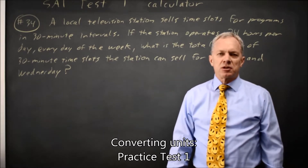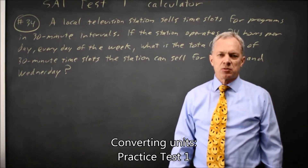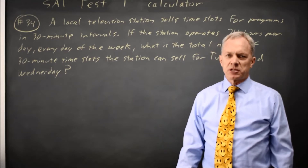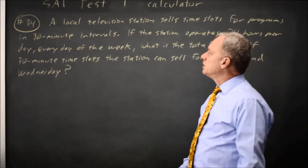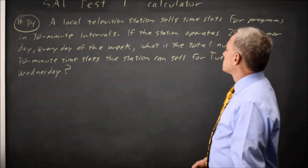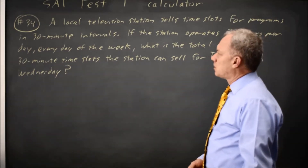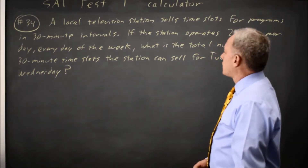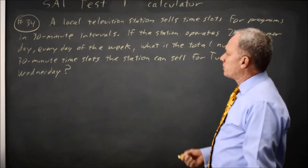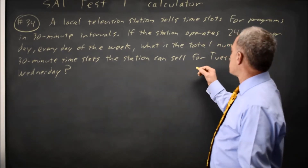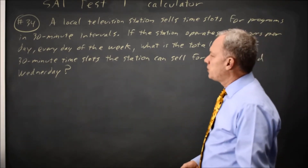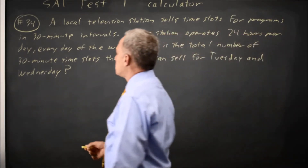This is calculator question number 34 from SAT Practice Test 1. College Board gives us a word problem dealing with selling time slots on a TV station, and they ask how many total 30-minute time slots can they sell over a two-day period.